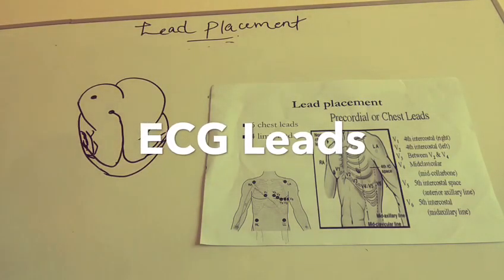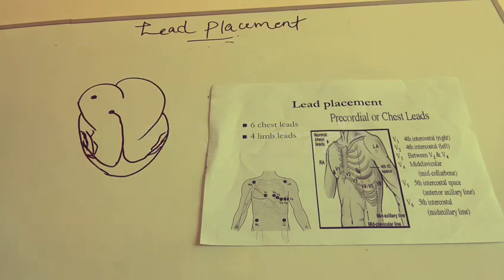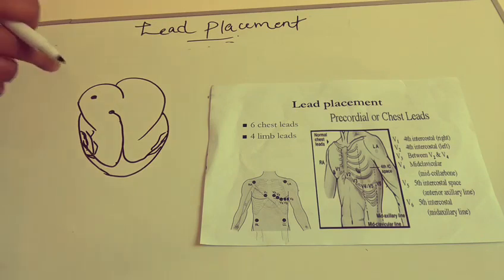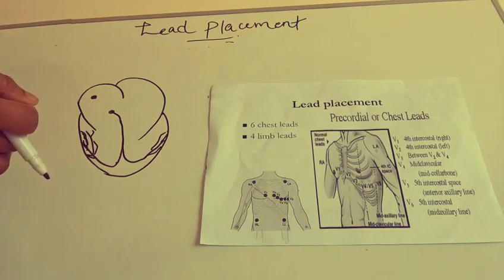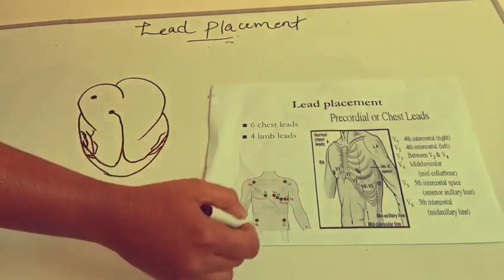I'm Rache, and this is the lead placement tutorial. For a 12-lead ECG paper, we put six leads on the chest and four on the limbs. The limb leads are placed on the arms and the legs.